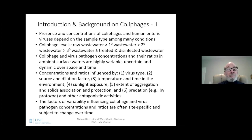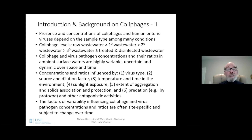What we know is that the presence and concentrations of coliphages and human enteric viruses depend upon the type of sample and among the variable and different conditions in the environment. Overall, coliphage levels go from highest to lowest from raw wastewater to primary, secondary, tertiary effluents, and finally treated and disinfected wastewater effluents. Coliphage and virus pathogen concentrations and their ratios in ambient surface waters are highly variable, uncertain, and dynamic over time and space.